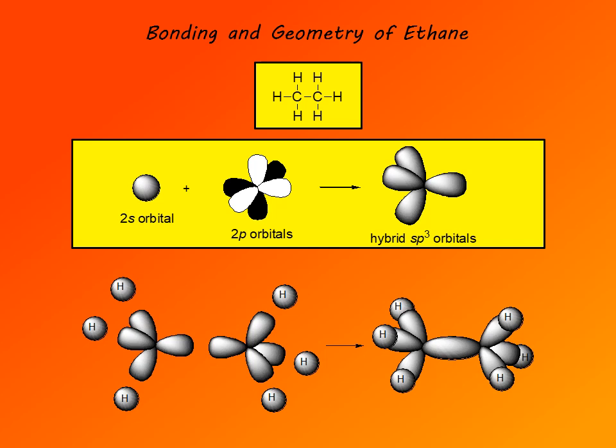The two lobes have opposite signs — one is shown as black and the other as white. The three 2p orbitals are shown at 90° to each other. They hybridize to form four hybrid sp3 orbitals, which have a tetrahedral arrangement at angles of 109.5° to each other.